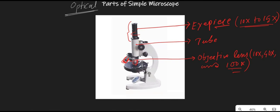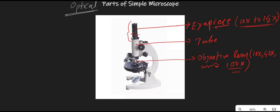The next part is the nose piece, also known as the turret. It is used for holding the objective lenses, and can be rotated while examining a sample. You can rotate the nose piece to change the magnification of the objective lens — for example, to switch from 10x to 40x, you rotate the nose piece so the desired lens clicks into place.